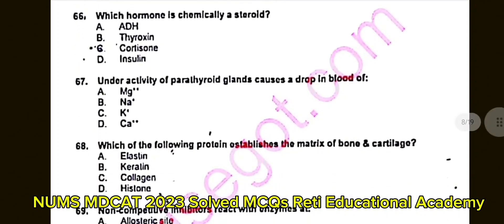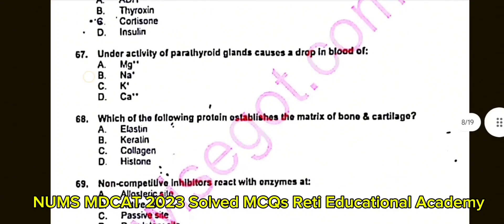Question number 68: Which of the following proteins establishes the matrix of bone and cartilage? A. Lestin. B. Keratin. C. Collagen. D. Histone. The correct answer is C: Collagen.